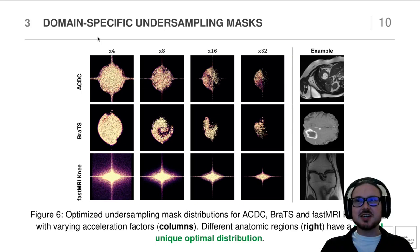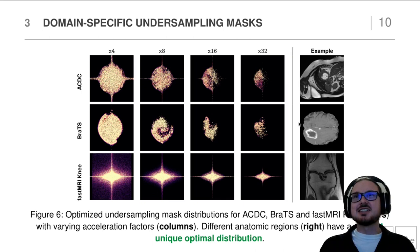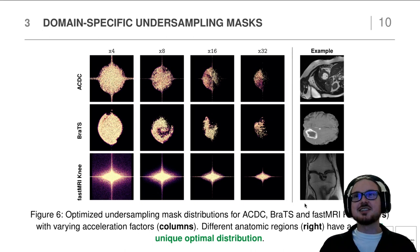In our experiments we found that reconstruction can definitely profit from domain-specific undersampling masks, as you can see here for heart, brain, and knee MRIs. You may notice that the heart and brain consist more of elliptic shapes, so the derived masks are somewhat similar to each other, whereas the knee — with a lot of vertical and horizontal lines — has a more distinct pattern in comparison to the other two datasets.